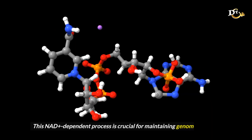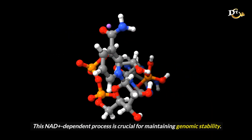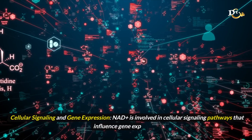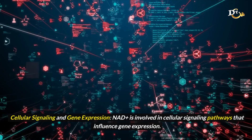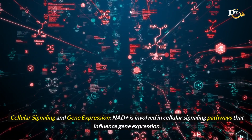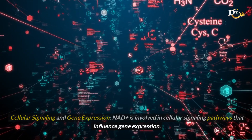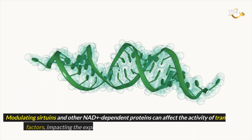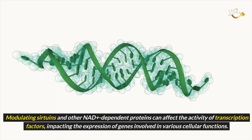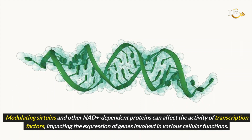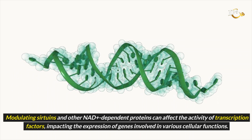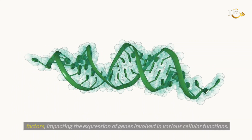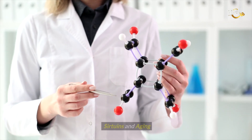This NAD-dependent process is crucial for maintaining genomic stability. NAD is also involved in cellular signaling pathways that influence gene expression. Modulating sirtuins and other NAD-dependent proteins can affect the activity of transcription factors, impacting the expression of genes involved in various cellular functions.